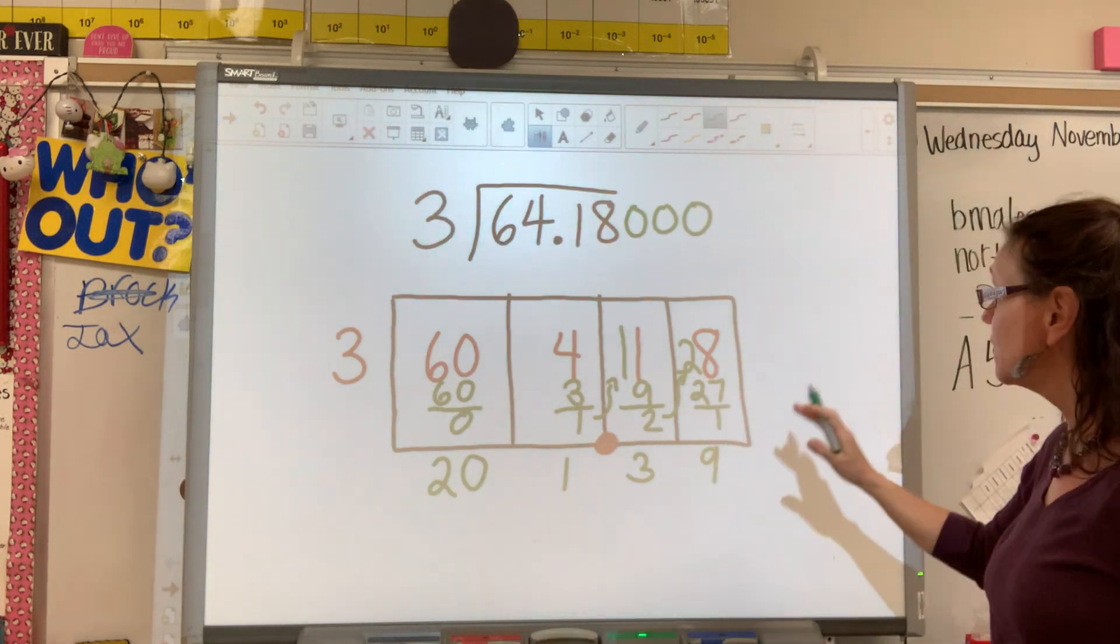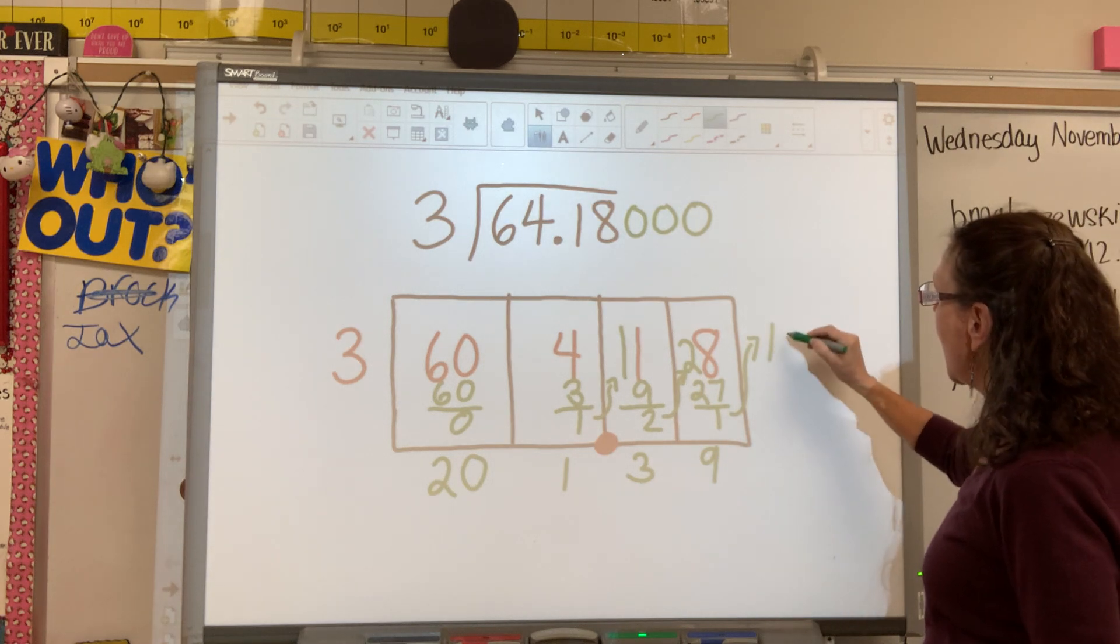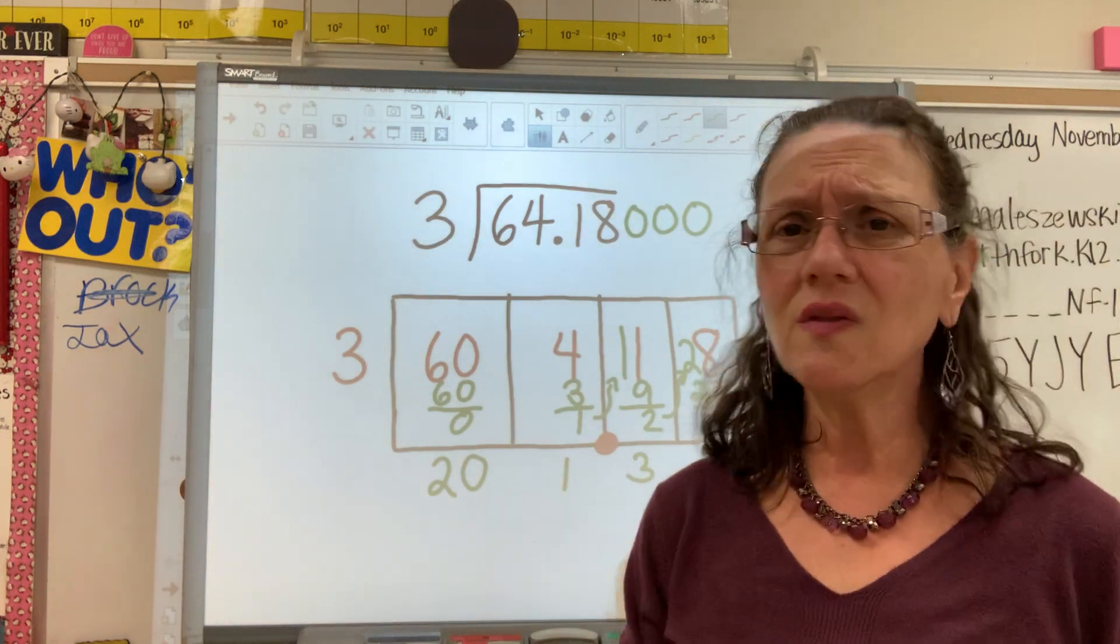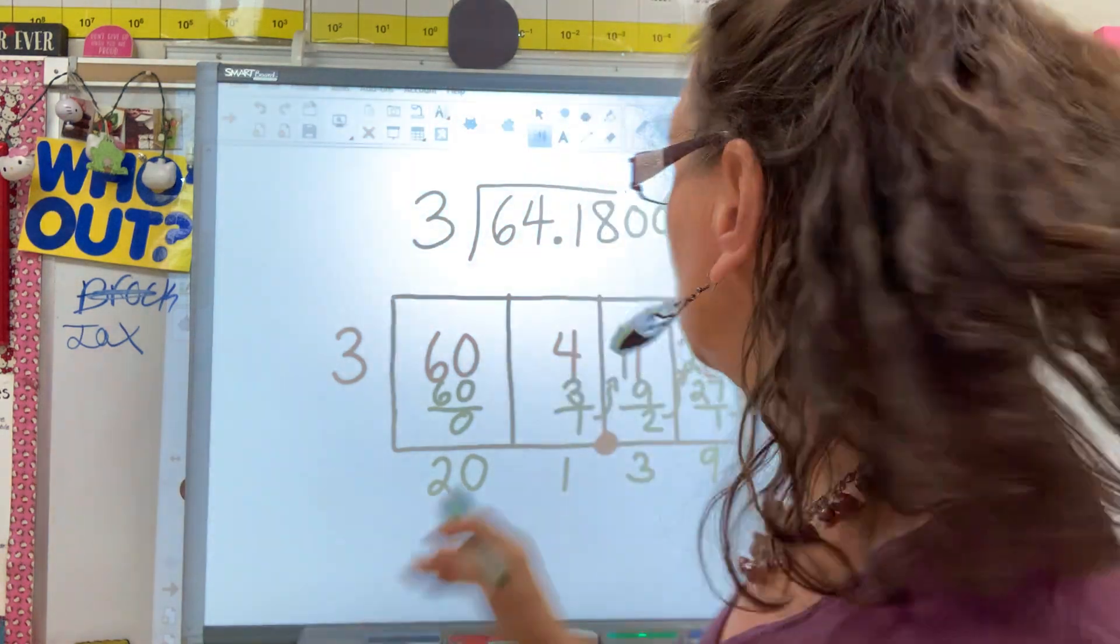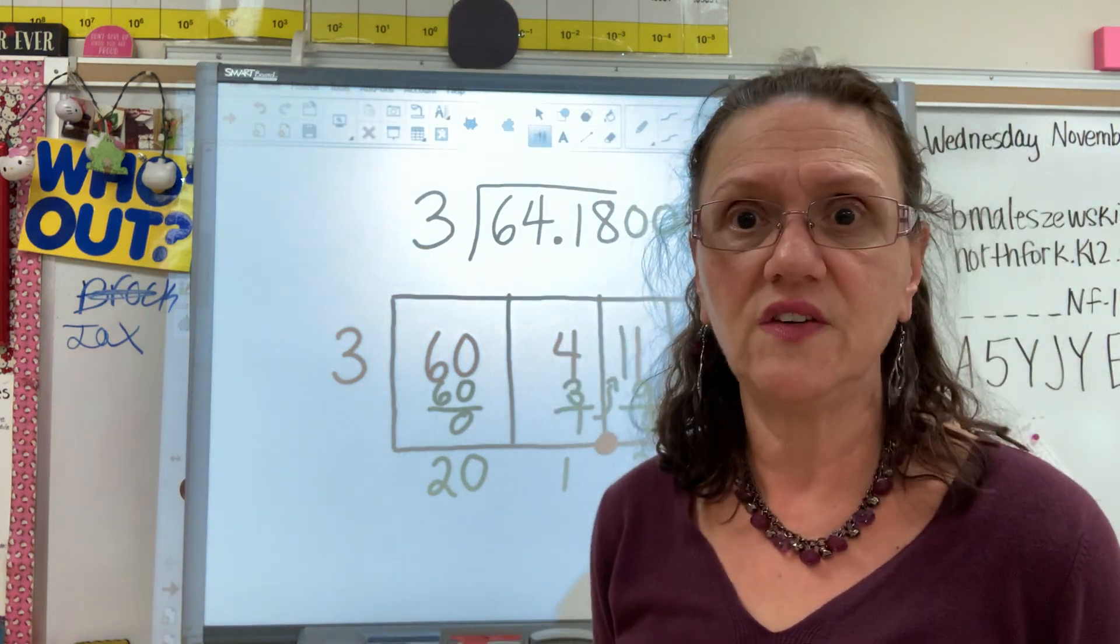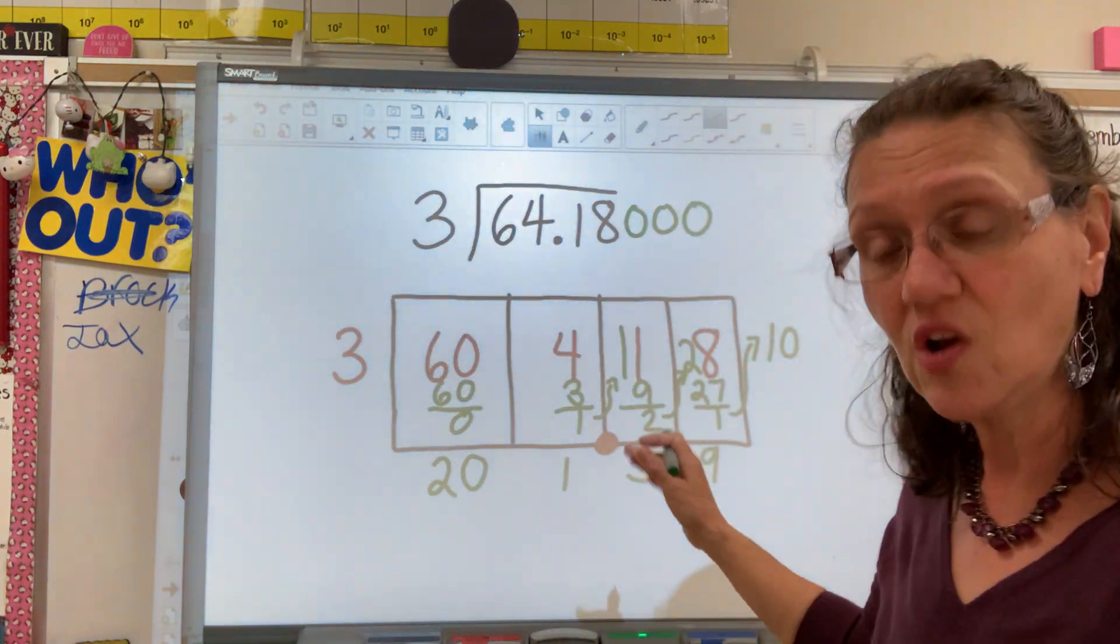I can do the same thing with my box. So I can take my one outside the box and put it with a zero and keep dividing. And you can do this as many times as you want, because you can use as many zeros as you want and not change the value of the dividend. But at some point you got to stop, right? We're going to stop right after this.